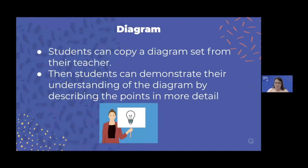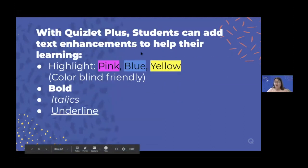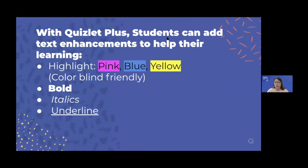With Quizlet Plus, students can use text enhancements to help their learning. I really like that the highlight colors are pink, blue, and yellow — I've heard from students who are colorblind that those are actually good colors for them. You can also use bold, italics, and underline. I would check with your students to see if these work for them. You can come up with a system for how you label things — maybe mark something specific in yellow, something in blue, something in pink. Or if students are using it just for themselves, they can do whatever works for them. You can also do this with your own Quizlet sets.